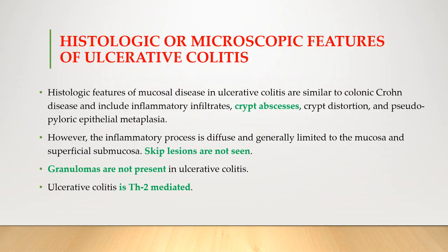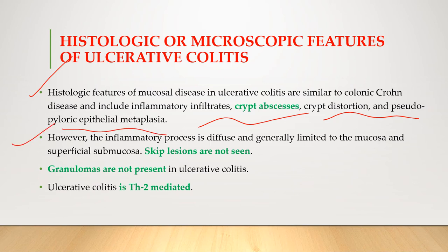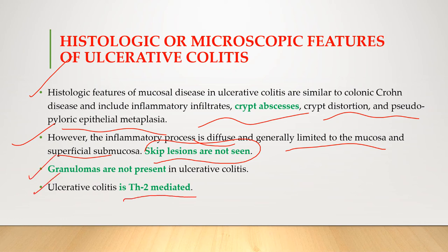The histologic features of ulcerative colitis include crypt abscesses, inflammatory infiltrates, crypt distortion, and pseudopyloric epithelium metaplasia. The inflammatory process is diffuse and generally limited to the mucosa and superficial submucosa. Skip lesions are not seen in ulcerative colitis. There are no granulomas, and it is TH2-mediated, whereas Crohn's disease was TH1-mediated.